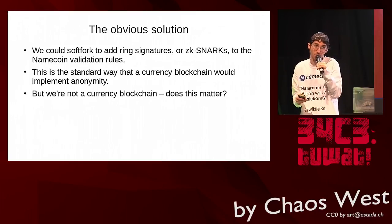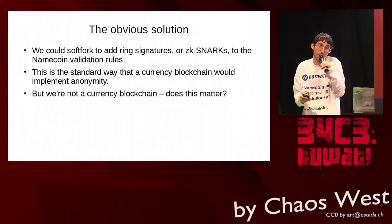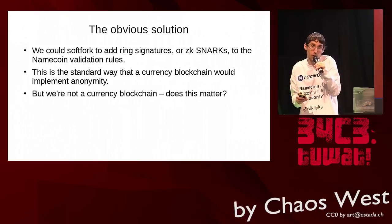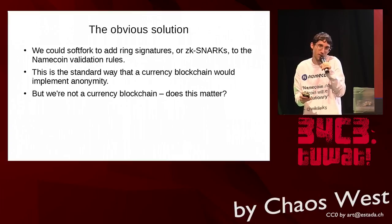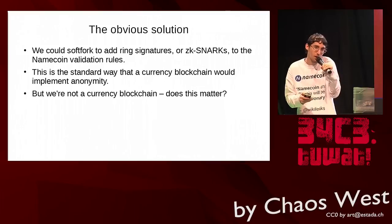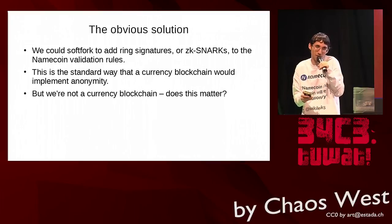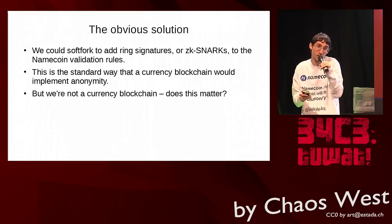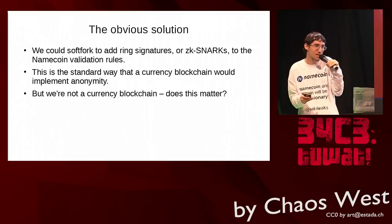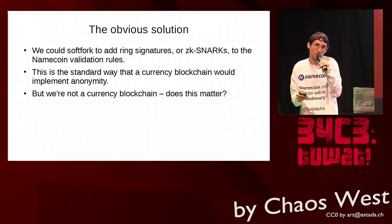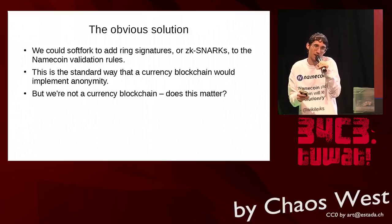If you follow cryptocurrencies, you're probably aware that there are cryptocurrencies out there that have reasonably good anonymity. The two most well-known examples are Monero and Zcash. The obvious solution that a lot of people have suggested to us is: you should just do a soft fork so that you can add ring signatures from Monero or zk-SNARKs from Zcash, and that way you'll have all the same anonymity features. But this assumption derives from what you would do in a currency blockchain. Namecoin isn't a currency blockchain — you can use it as a currency, but the primary use case is naming — and so it's not at all clear that assumption holds well.